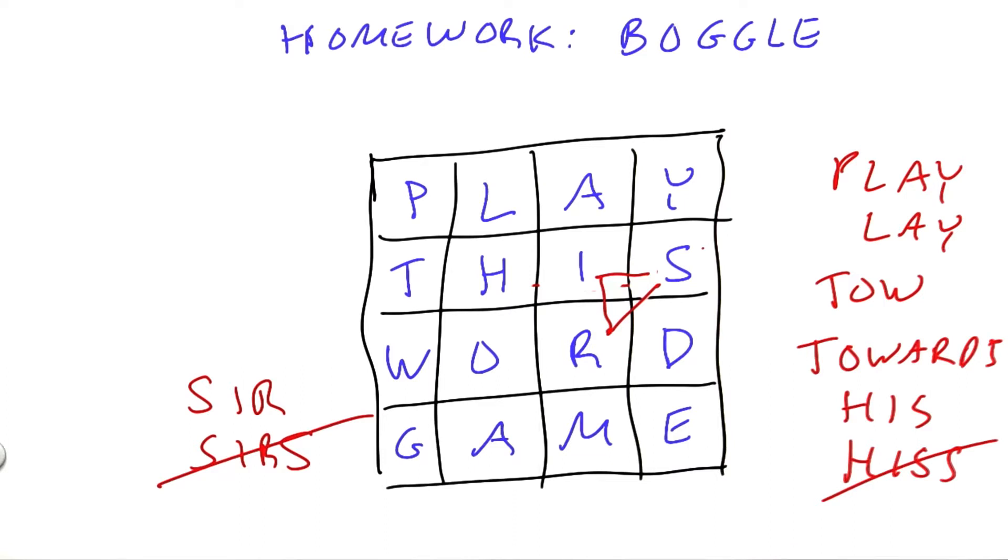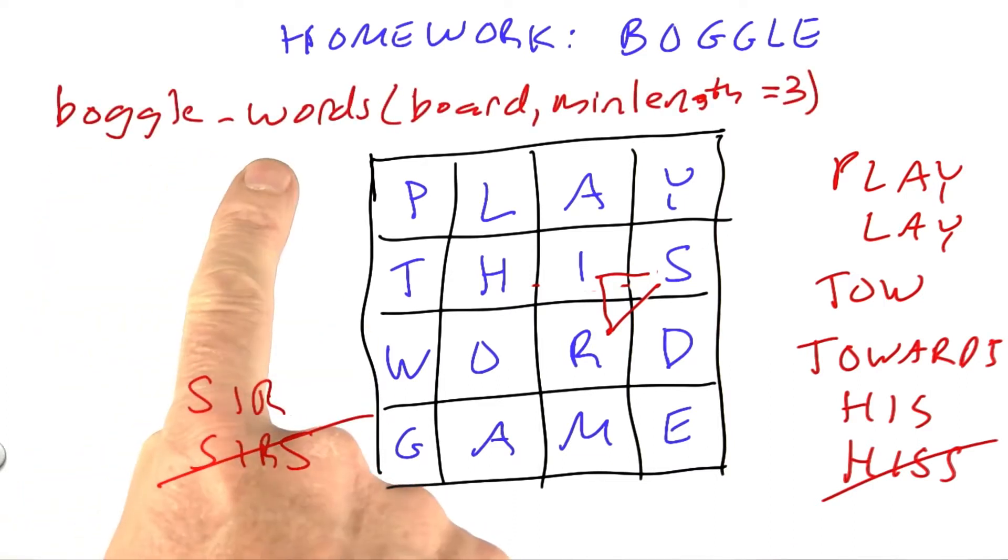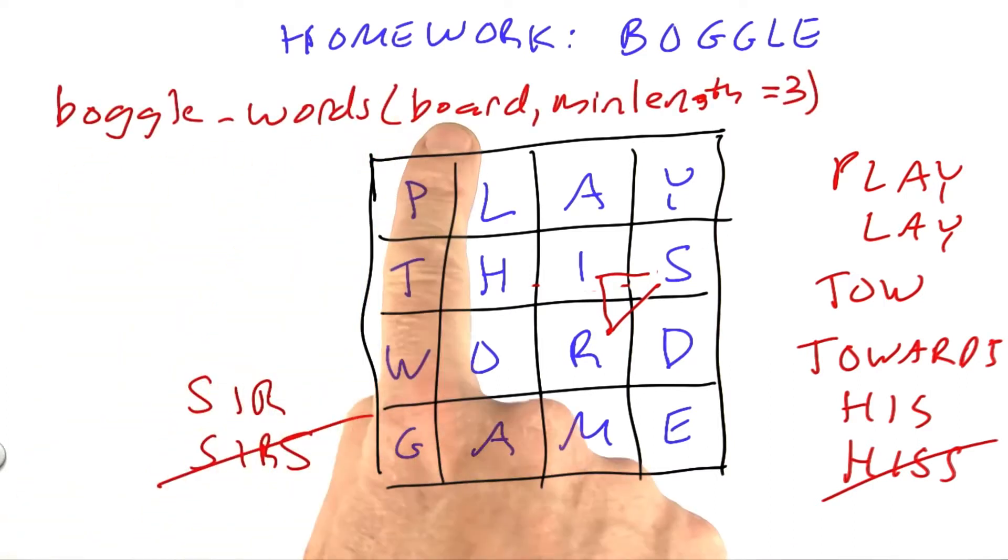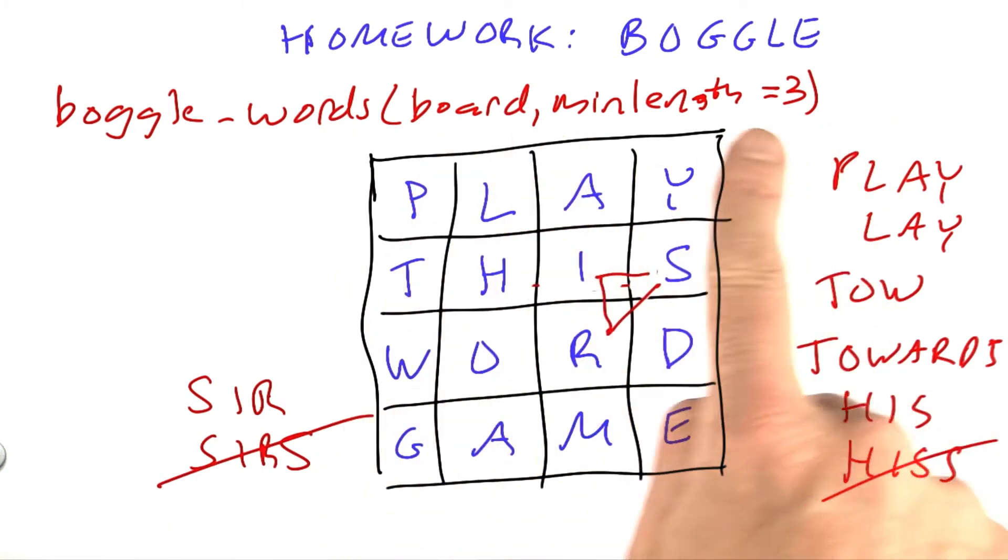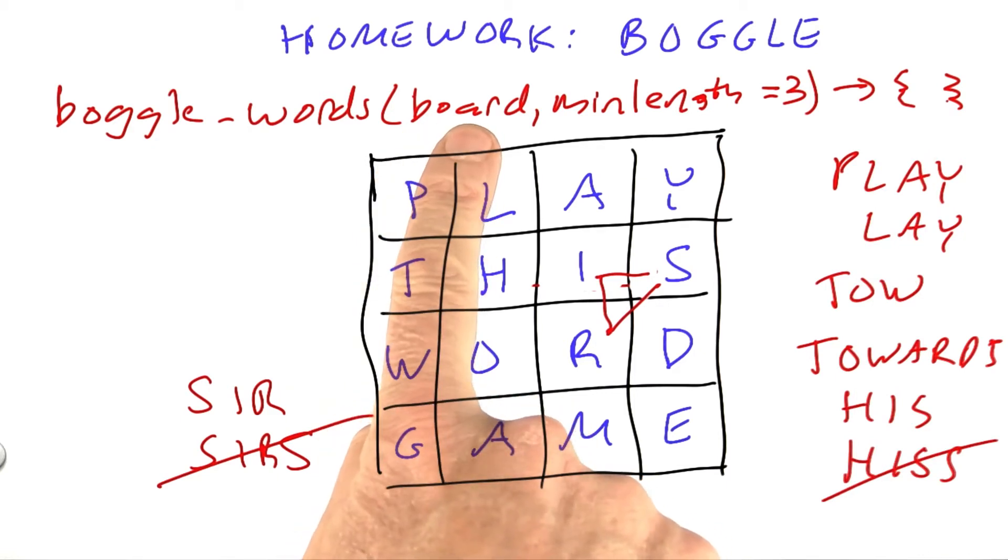I'm going to ask you to write the function boggle_words, which takes as input a representation of the board, like this, and a minimum length of the words that count. Three-letter words at least. Two-letter words don't count, so don't bother returning them. It returns a set of words, which again are taken out of our words dictionary.